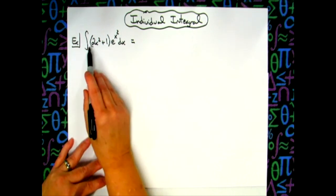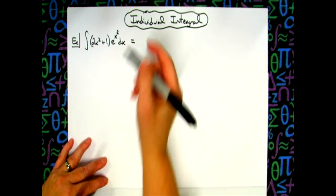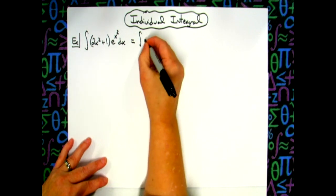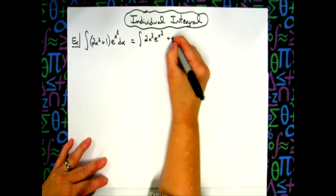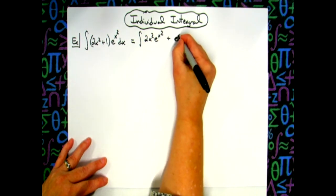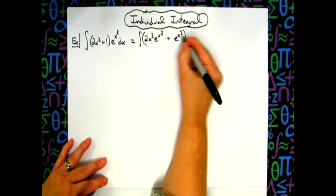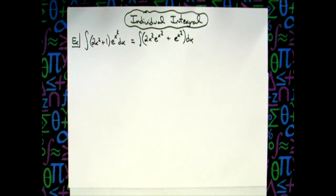First, I'm going to distribute that e^(x²). So I'm going to have the integral of 2x²e^(x²) + e^(x²) dx. All we did there was distribute that in.